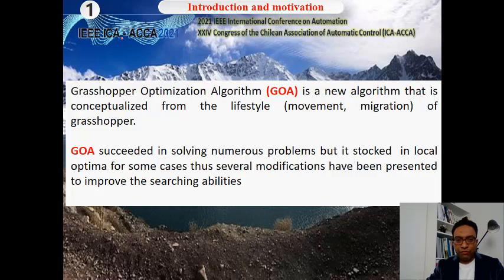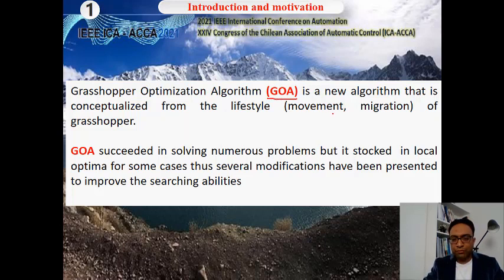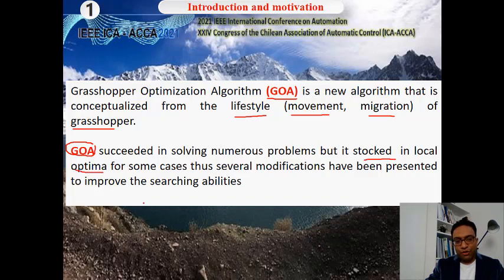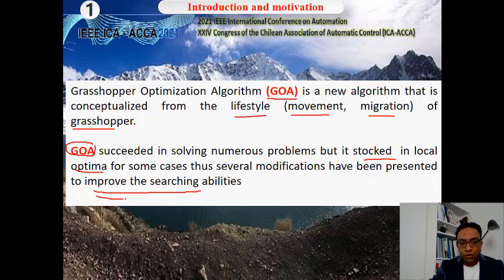In the Introduction and Motivation, we will talk about the Grasshopper Optimization Algorithm. The Grasshopper Optimization Algorithm is a new algorithm conceptualized from the lifestyle of a grasshopper. It simulates the lifestyle of a grasshopper for movement and migration. The GOA succeeded in solving numerous problems but got stuck in local optima in some cases, so several modifications have been presented to improve its searching abilities.